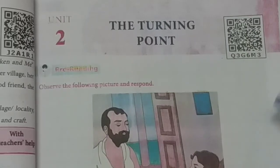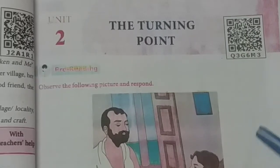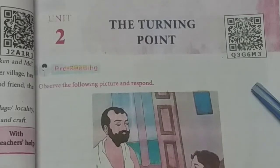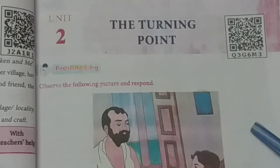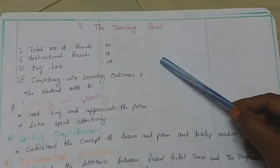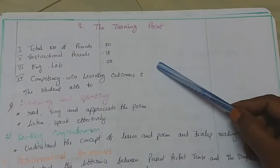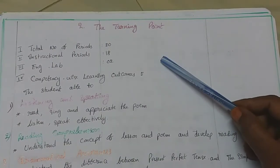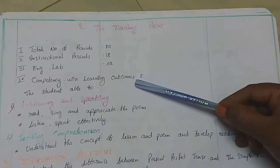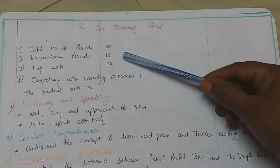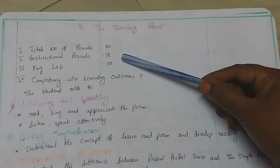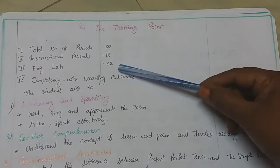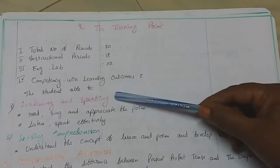Hello everyone, welcome to today's class. This is the lesson plan for the second unit in English, 'The Turning Point', written by A.P.J. Abdul Kalam. This is the phase sheet, written from the AP New Silvers Blossom 7. The total number of periods we need is 20: 18 instructional periods and 2 for the English lab.